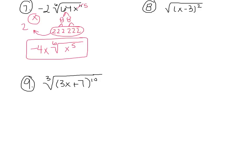Looking at the next one, this should be a review from the last unit. When you take the square root of something squared, that just cancels, and so you're just left with x minus 2. And that would be your answer.